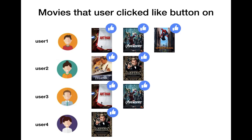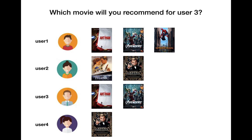Here's the example with a movie recommendation system. Say you are the movie provider and you already have four users, and they click the like button on the movies they watched and liked. Which movie will you recommend for user 3, who already watched Ant-Man and Avengers?